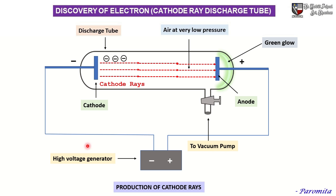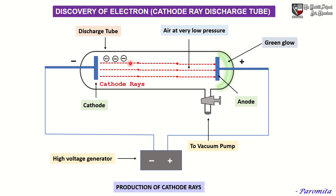Under ordinary conditions, gases are bad conductors of electricity. But a gas becomes a good conductor of electricity if the pressure of the gas is very low and the voltage applied is very high. These conditions are achieved in a discharge tube. A discharge tube is a long glass tube having two thin metal plates sealed at the two ends, and these metal plates are termed as electrodes.